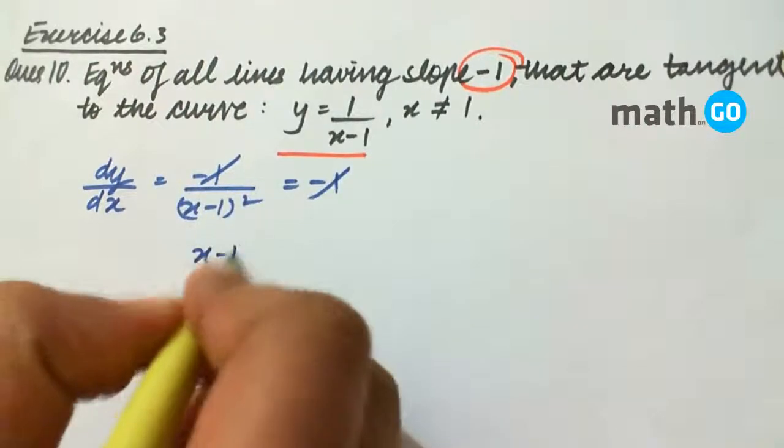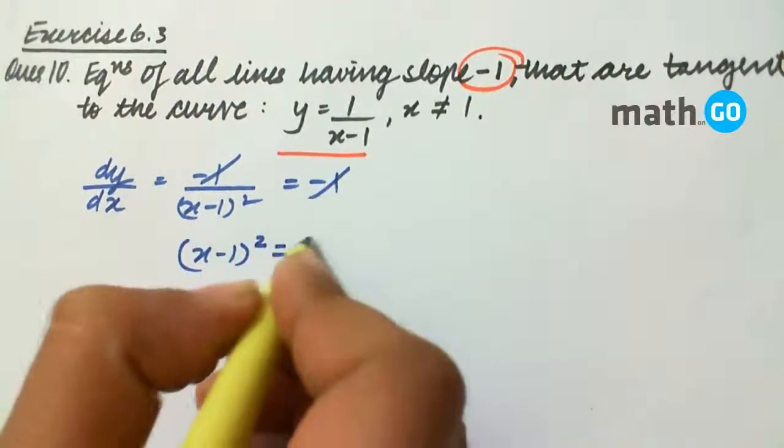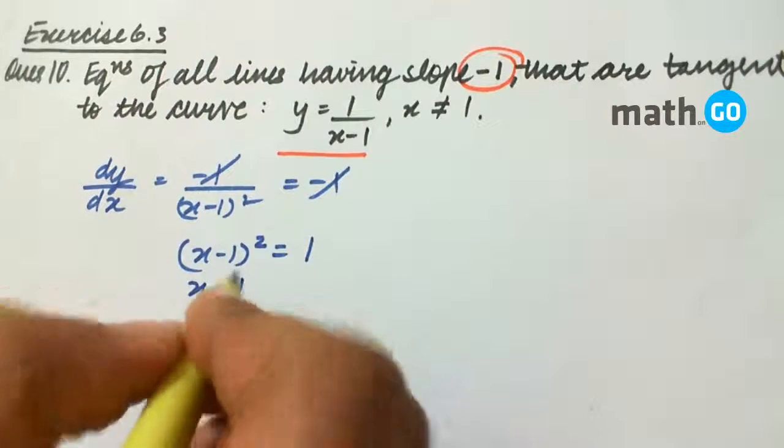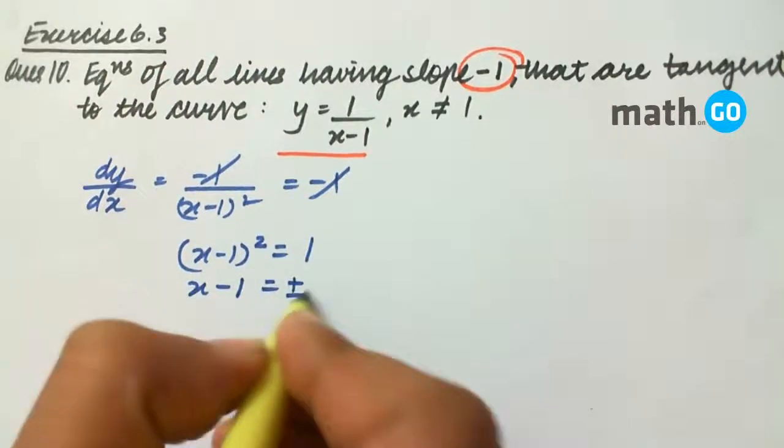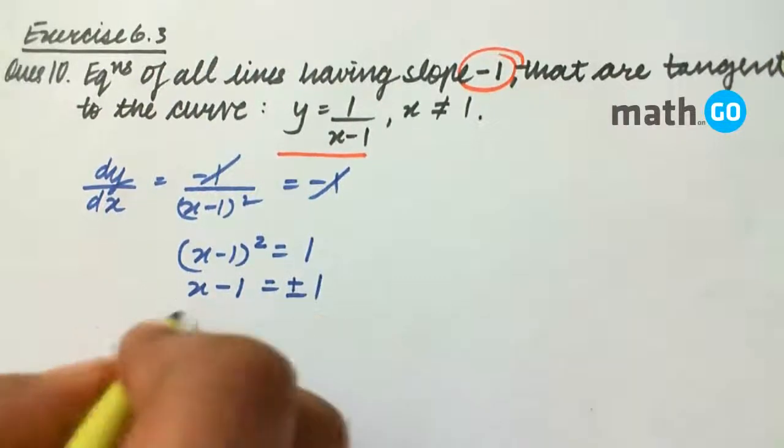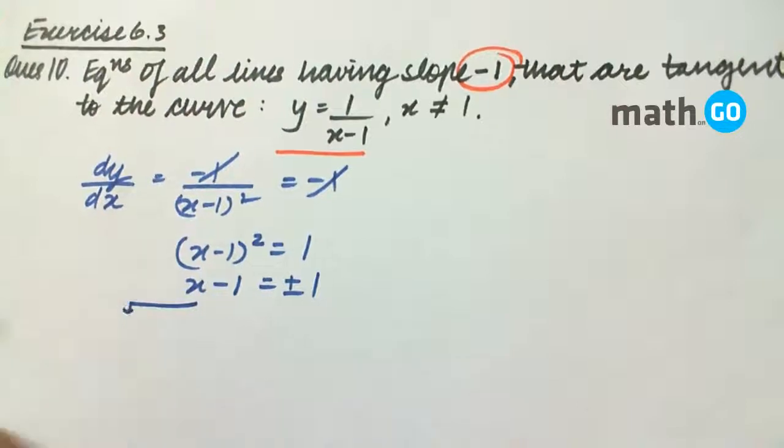So we have (x-1)² = 1, or x-1 = ±1, giving us two values of x.